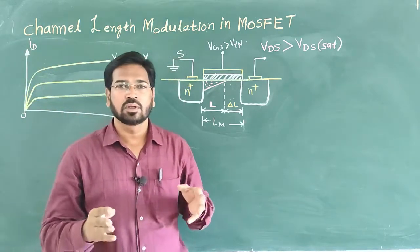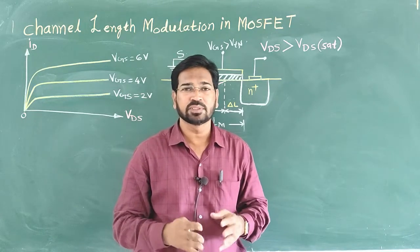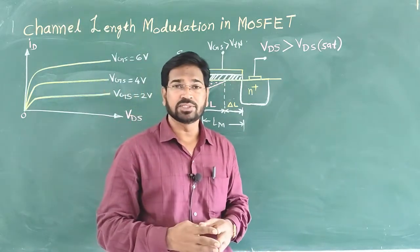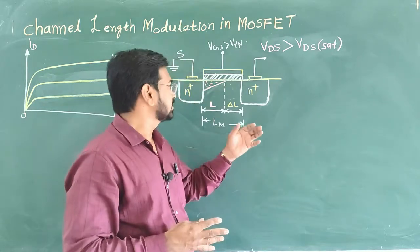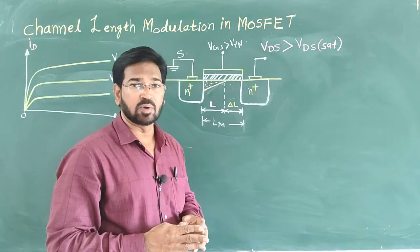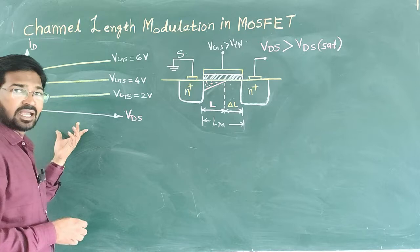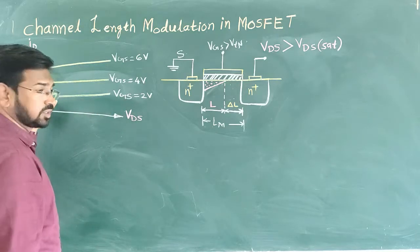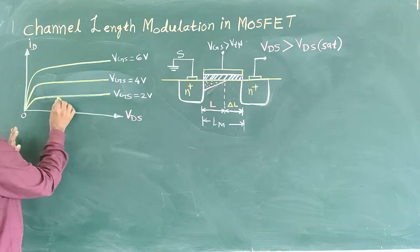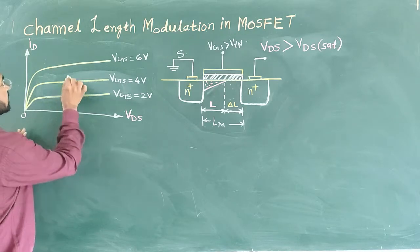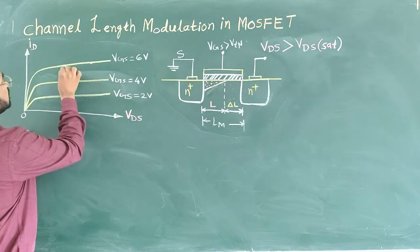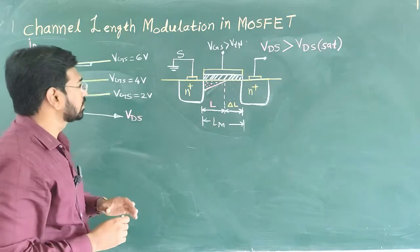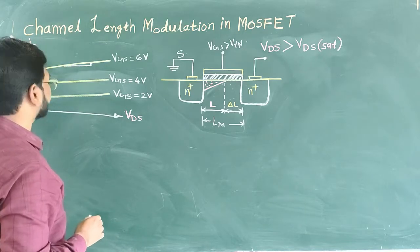Hello students, today we are going to understand the concept of channel length modulation in MOSFET. I have drawn the VI characteristic of an N-channel enhancement MOSFET and its working diagram of NMOS. We know the ideal VI characteristic of NMOS has zero slope, but in this characteristic I have shown some positive slope. If you take these two points, you will get some positive slope — the line is somewhat rising — and it shows the dependence of drain current on VDS.